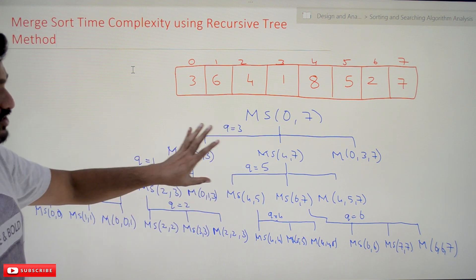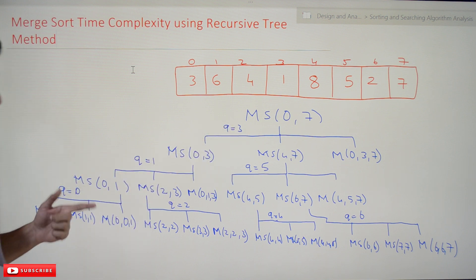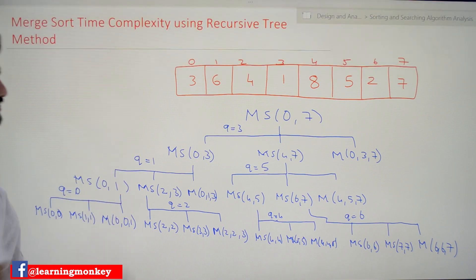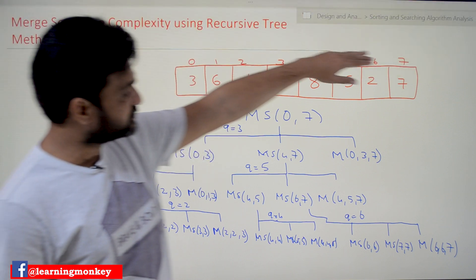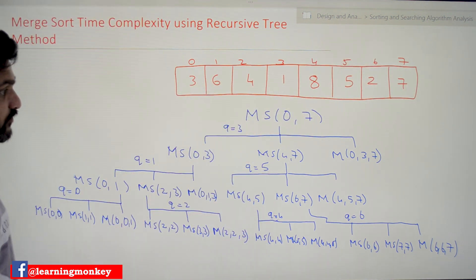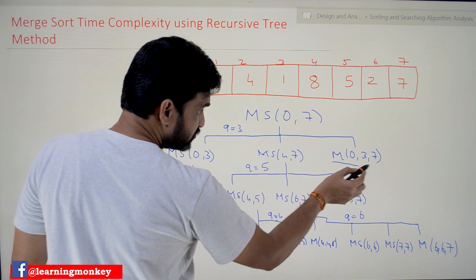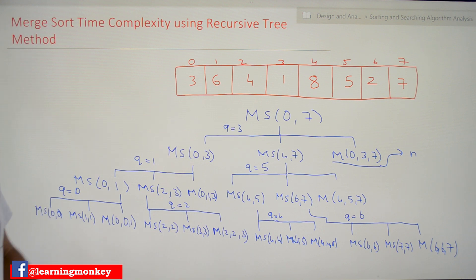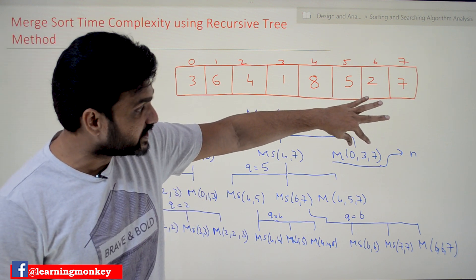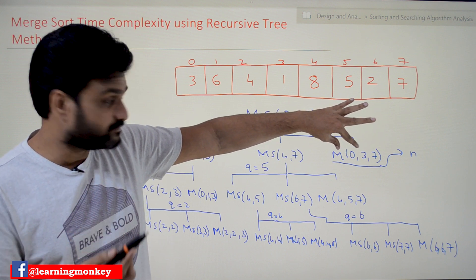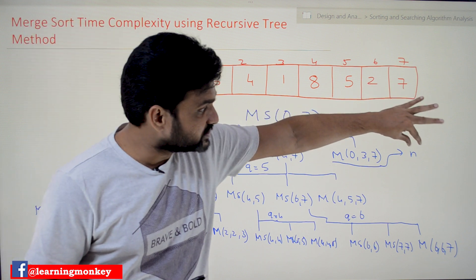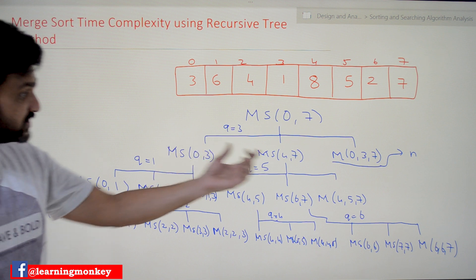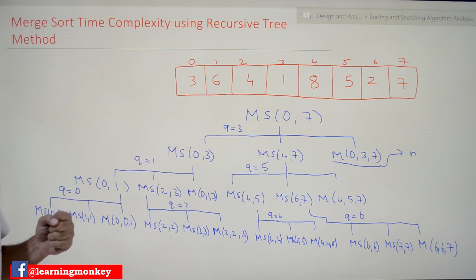This is the recursive tree we drew in our previous class. After obtaining this recursive tree, we have to find the efficiency. This is for merge sort with eight elements. Now, every merge function call is going to take n number of comparisons. In the substitution method and master's method videos, we discussed that the merge step takes n step counts to execute. The MS function call is used to divide the array into smaller pieces — that's all it does.